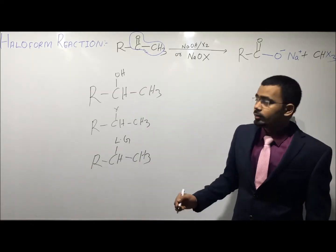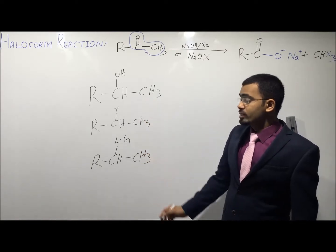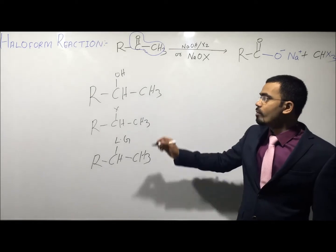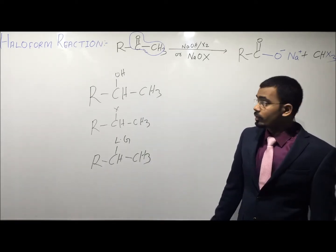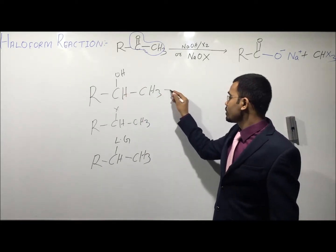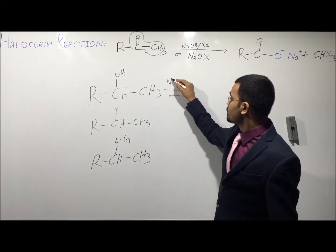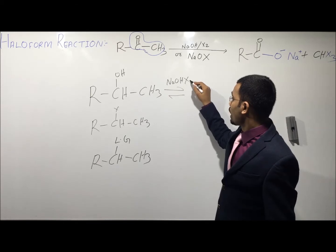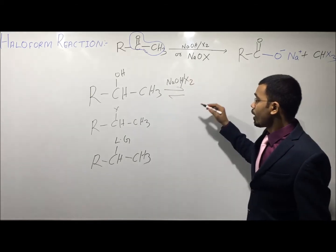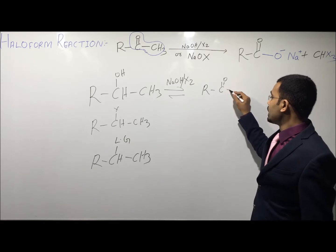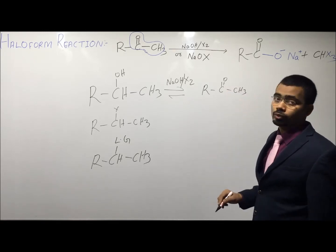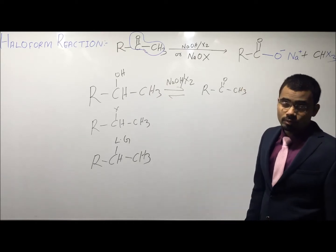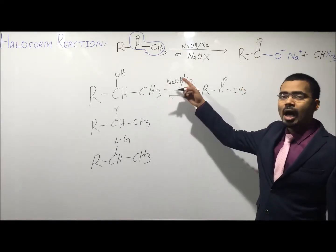So my dear students, these are the examples which will show the haloform reaction. This alcohol will firstly be oxidized in the presence of NaOH and X2 to form a methyl ketone. So this group is easily convertible into a methyl ketone, and therefore it will show the haloform reaction.